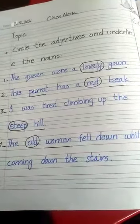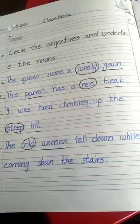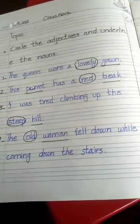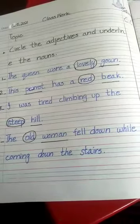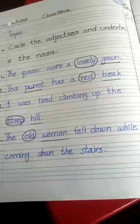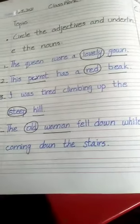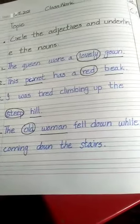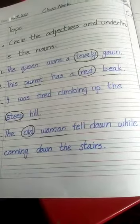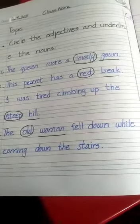Number three: I was trying climbing on the steep hill — 'steep' is the adjective of the noun 'hill'. Number four: the old woman fell down while coming down the stairs — 'old' is the adjective of the noun 'woman'. Remember, underline the noun and circle the adjective.